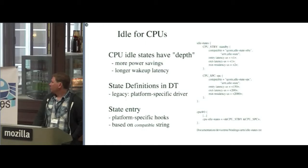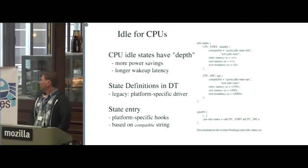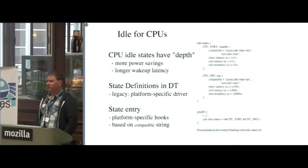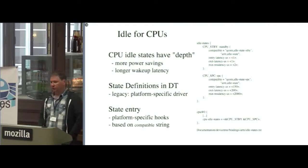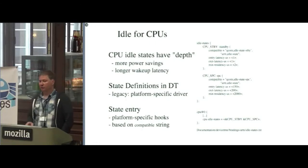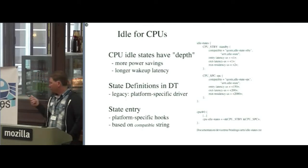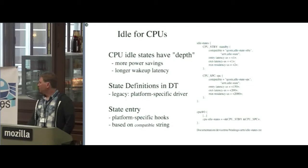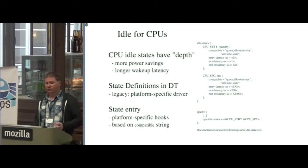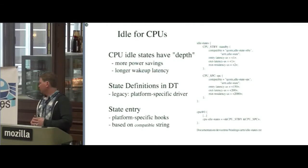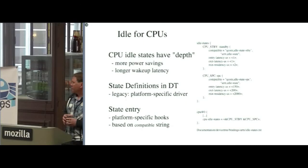There are some device tree snippets that show how to describe these idle states. You give them a name, and you have to know how long it takes the hardware to enter and exit these states and how long you need to stay in that state before it's a break-even point. If you spend a lot of energy getting in and out of these idle states too often, you could actually waste more energy than actually hitting them. There's a lot of legacy platform-specific drivers, but now we can describe all this in device tree as well. If you describe all this in the device tree, you can get CPUIdle working pretty easily. There's documentation for the ARM-specific way of defining idle states in the device tree.